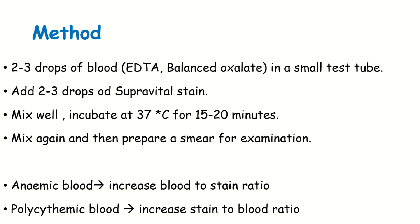Mix and incubate at 37 degrees Celsius for 15 to 20 minutes. For anemic blood, we have to consider how many RBCs to count. For polycythemic blood, the RBC amount is higher, while for anemic cases fewer RBCs are available to stain. This incubation step is important.